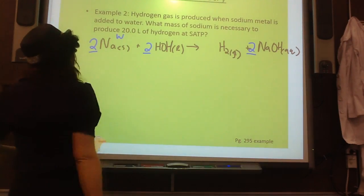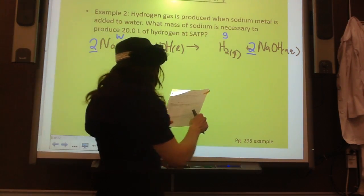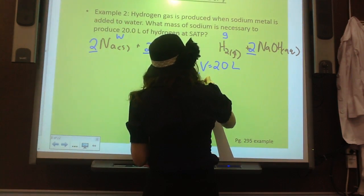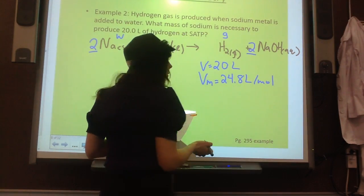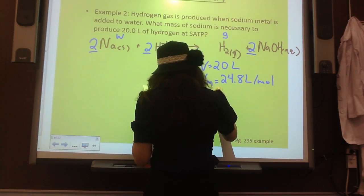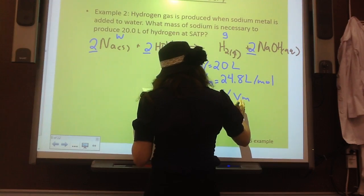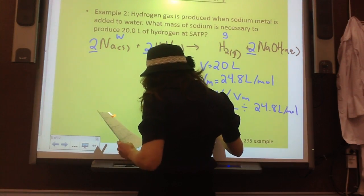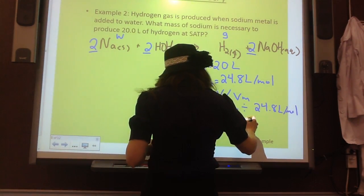So I want to find out information about my sodium. I am given information about my gas. So I'm told I want to produce 20 liters of this gas at SATP. At SATP, my VM is 24.8 liters per mole. So I'm going to find my given moles by using my molar volume. N is equal to big V divided by VM. So 20 liters divided by 24.8 liters per mole. And so N will equal, am I going too fast? 0.806 mole.